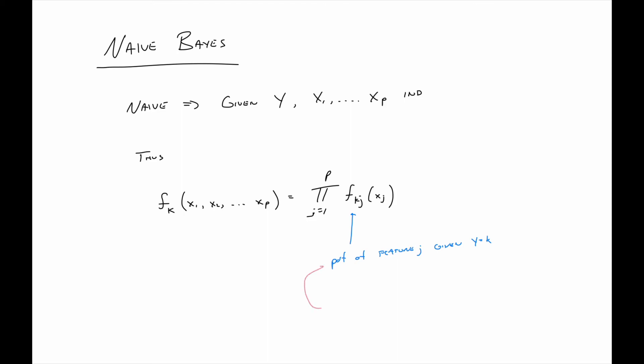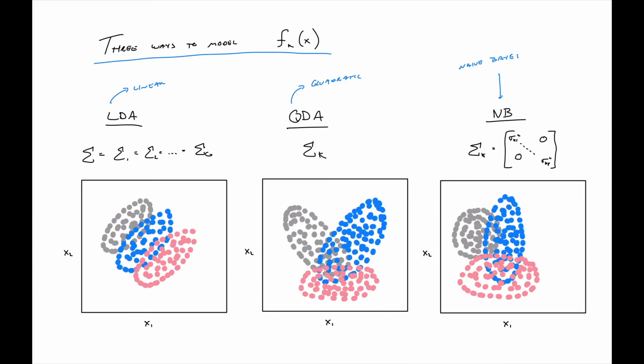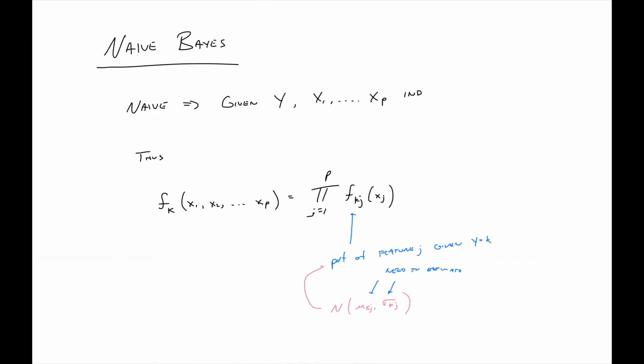And so in particular, we're assuming that that PDF follows a normal distribution with mean mu sub k j and standard deviation sigma k j. But now these are no longer vectors and matrices, these are both just scalars. And these are what we need to estimate. But that's faster estimation, that's easier estimation, and it's all in all far fewer parameters. Because if you compare naive Bayes to QDA in the same setup, QDA has to estimate all of the covariances, whereas naive Bayes just assumes they're zero and moves on. So it turns out that while the naive Bayes assumption is almost never satisfied, it works very well in practice, especially if you have a pretty large number of features.